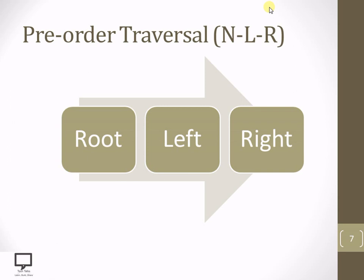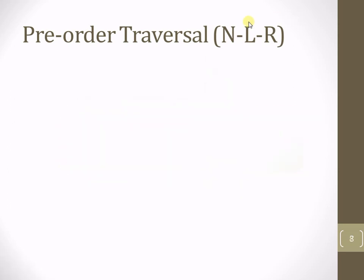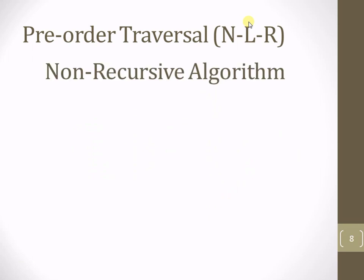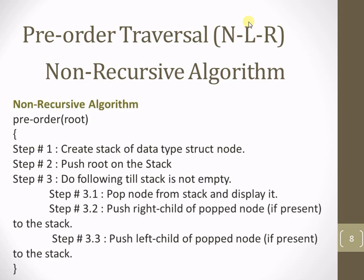To know all the details about pre-order traversal, I am providing a shortcut link in the upper right corner — you can go through the pre-order traversal playlist there. Now let's start with the non-recursive algorithm for pre-order traversal. Whenever we talk about a depth-first traversal technique like pre-order, we have to use the stack data structure. This supporting data structure helps us traverse the tree into depth because the stack follows the last-in-first-out property, and that's why we are going to use it.